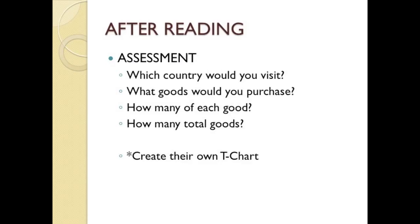The after-reading assessment ties together all the skills worked on before, during, and after the story. Students chose a country they would visit, wrote about what goods they would purchase, how many of each good, and the total number of goods — essentially creating their own T-chart based on their interests. Many students chose Japan. This activity tied together using tally marks, interpreting data, and writing number sentences with what they learned about the world through the multicultural book.